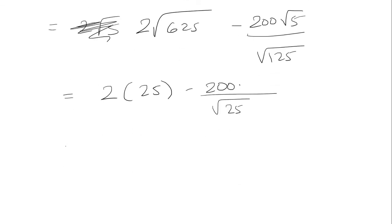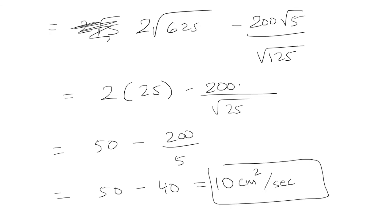So now I can multiply the 2 and the 25. And then the square root of 25 is just 5. So it's 50 minus 200 over 5 is 40. So that's going to be 10. So what we found here is a derivative of the area. The area has units centimeters squared. But because we took the derivative with respect to time, we need to divide by seconds. So this is my answer.